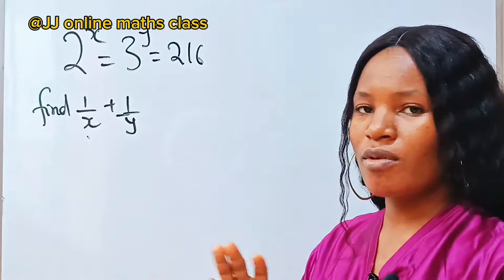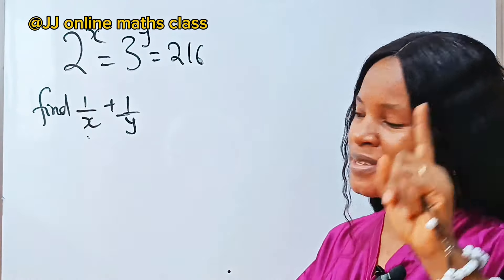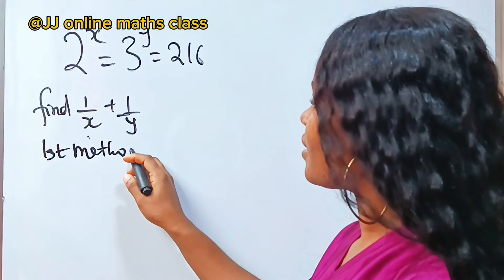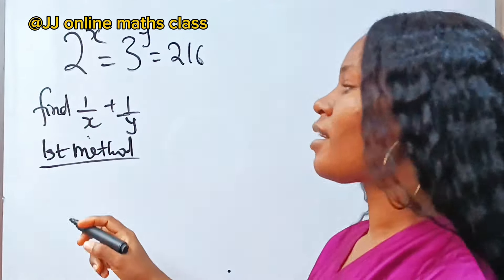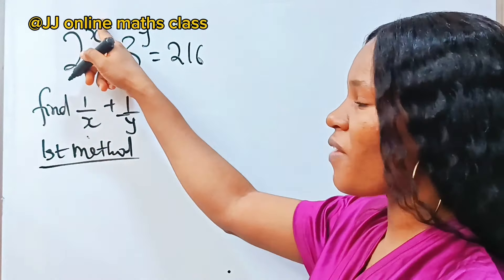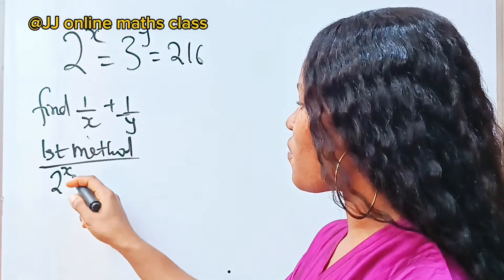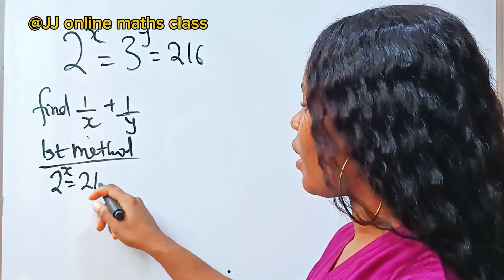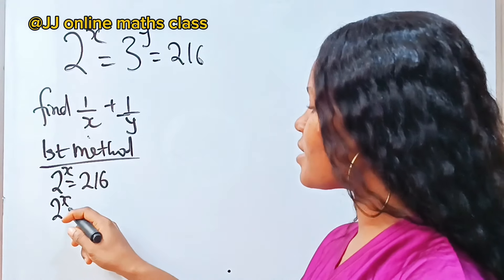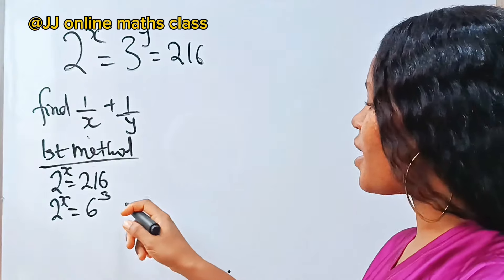We are asked to find 1/x plus 1/y. We are going to use two methods here. For the first method, we have two equations. The first is that 2 to the power of x is equal to 216. So 2^x is equal to 6 to the power of 3. Let's call this equation one.